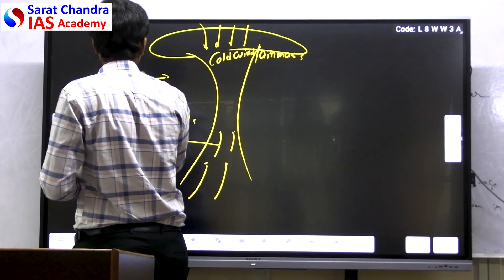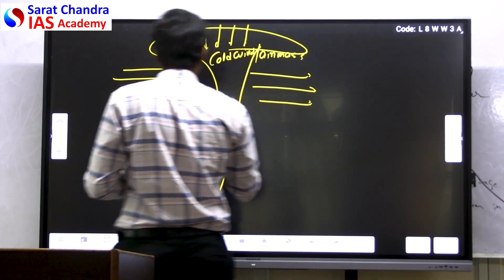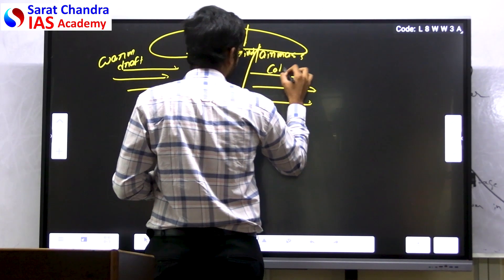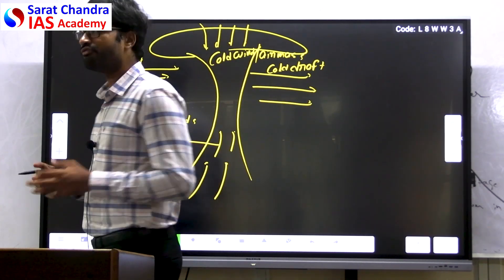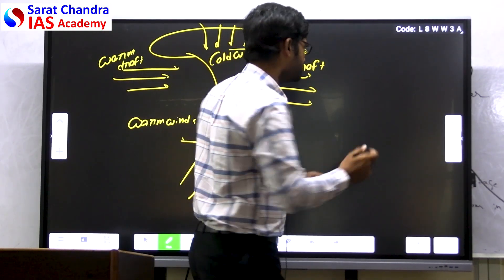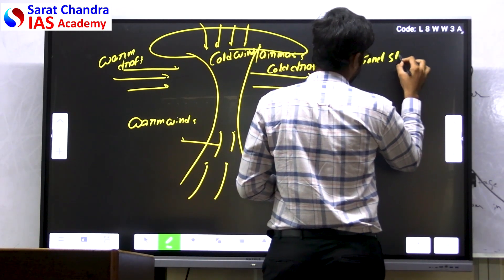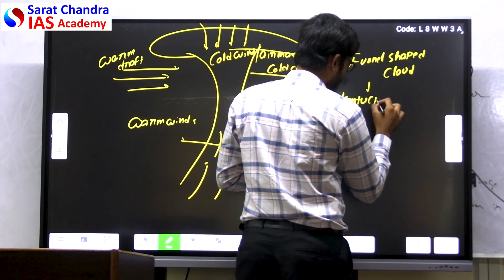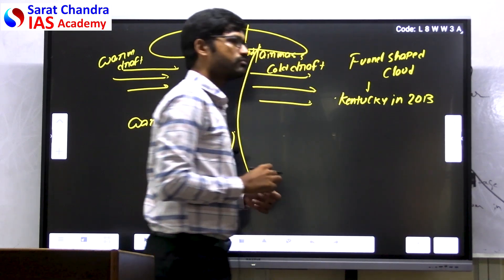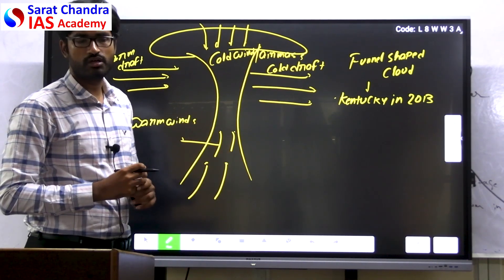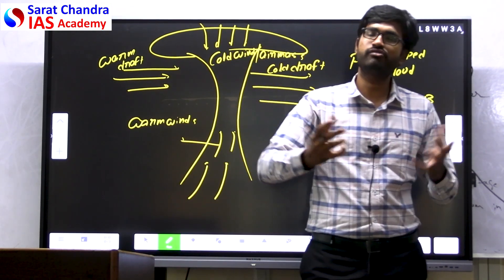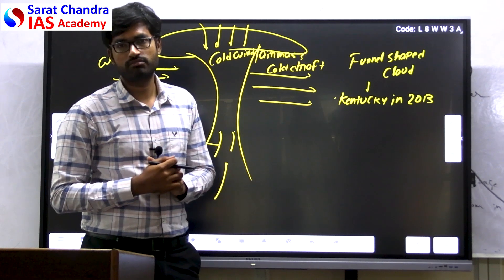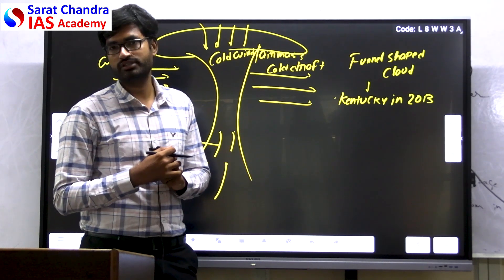Along with this, there needs to be a vertical air column. The warm drafts and cold drafts can lead to the formation of funnel-shaped clouds. This has been seen in Kentucky in 2013 — we can see funnel-shaped clouds. The intensity and speed of tornadoes also varies, and the duration can range from minutes to hours or even days.